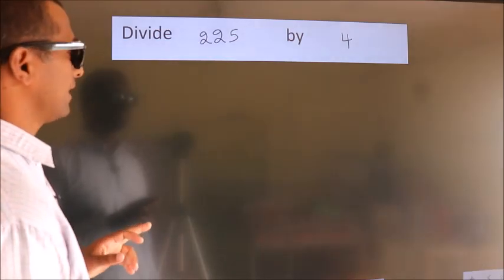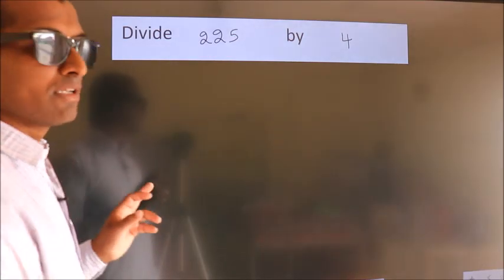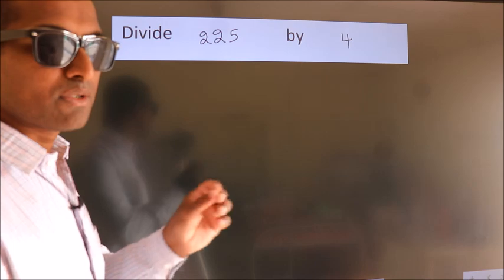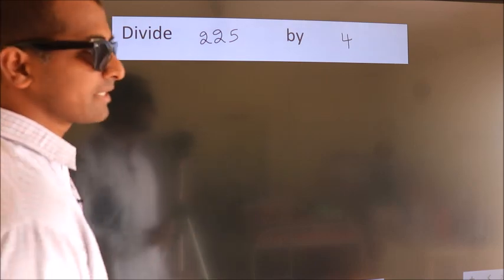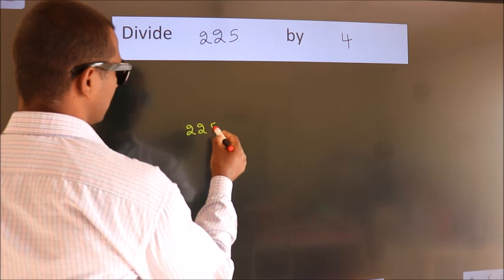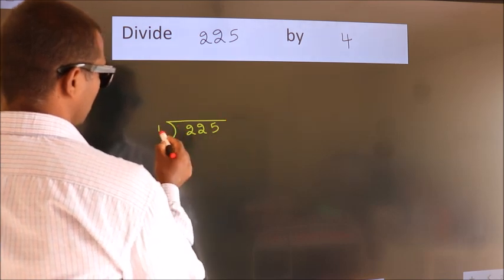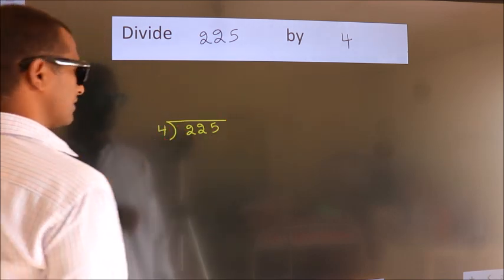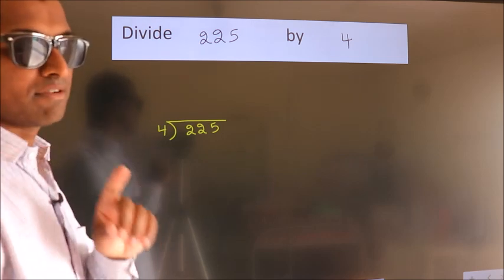Divide 225 by 4. To do this division, we should frame it in this way: 225 here, 4 here. This is your step 1.